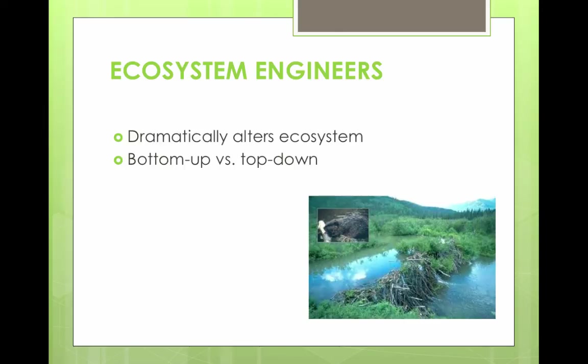If a species dramatically alters their environment, they are called ecosystem engineers. For example, a beaver building a dam will alter its environment. Looking at this model from the bottom up, an increase in vegetation leads to an increase in herbivores. Top-down, an increase in herbivores decreases vegetation. If vegetation and herbivores affect each other equally, there will be a change in biomass.